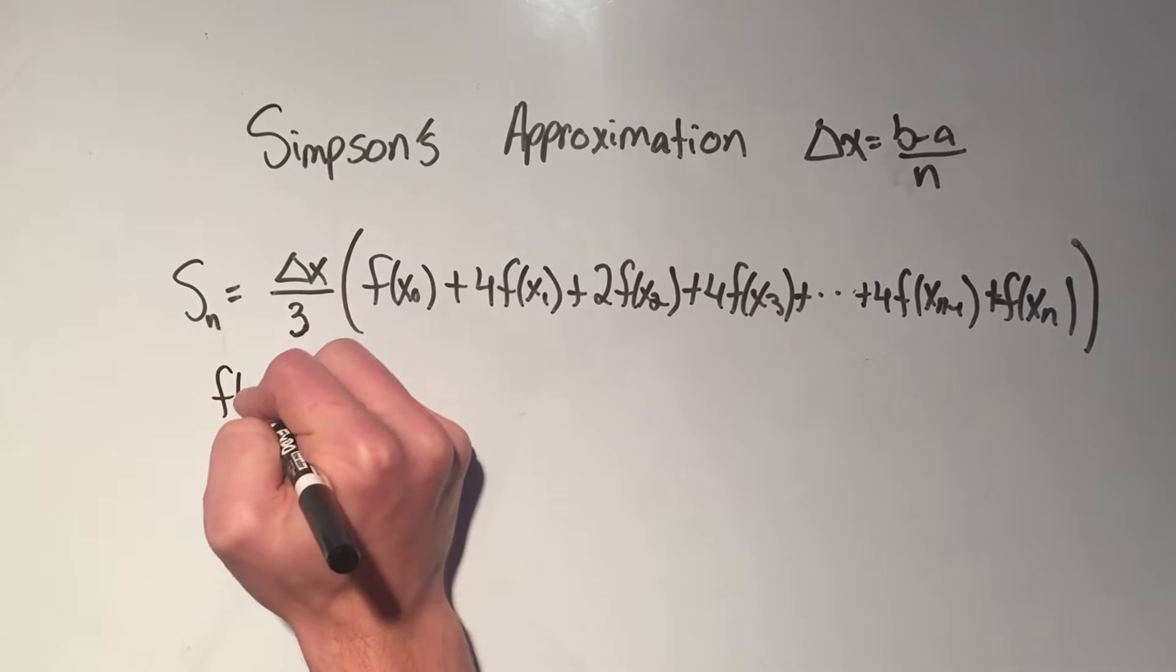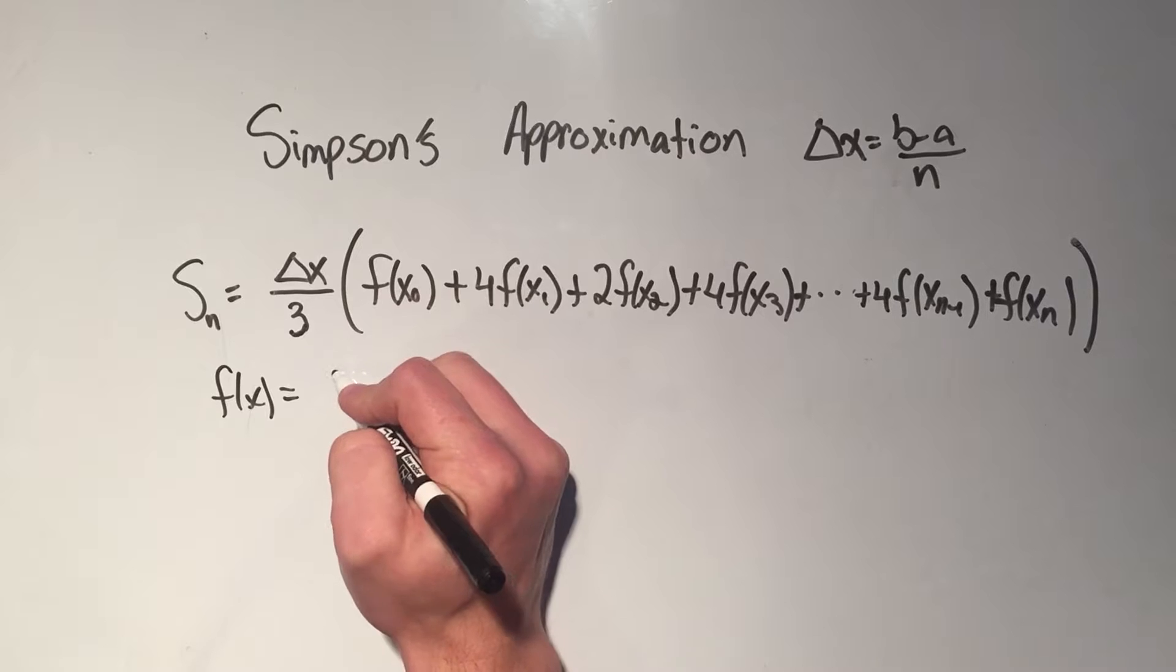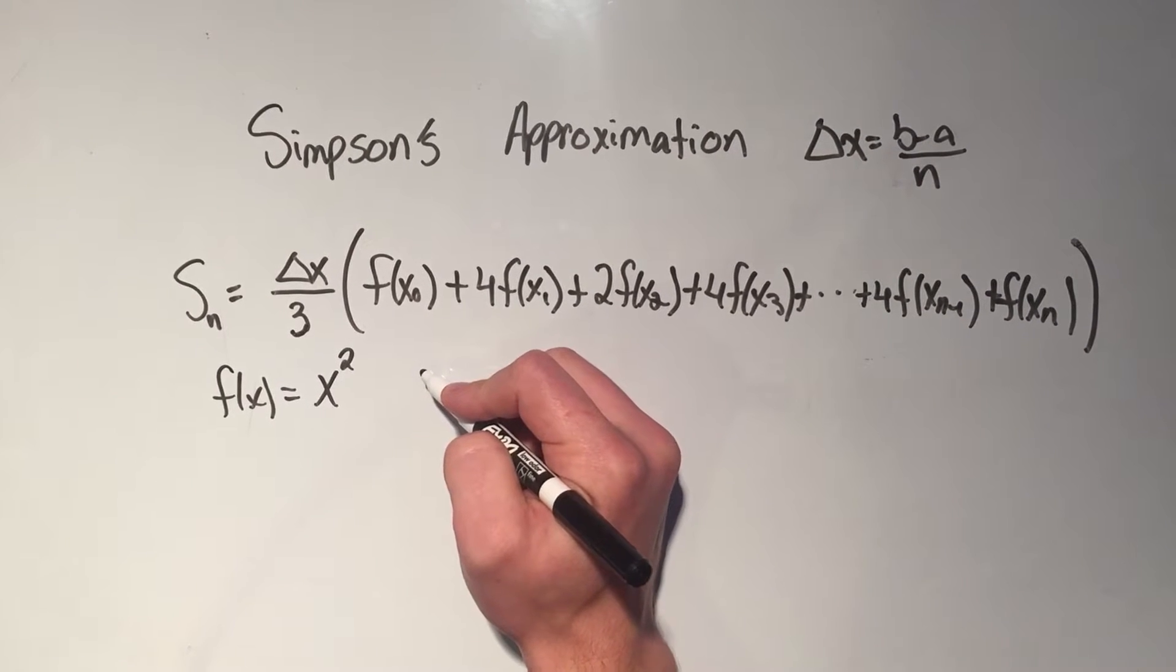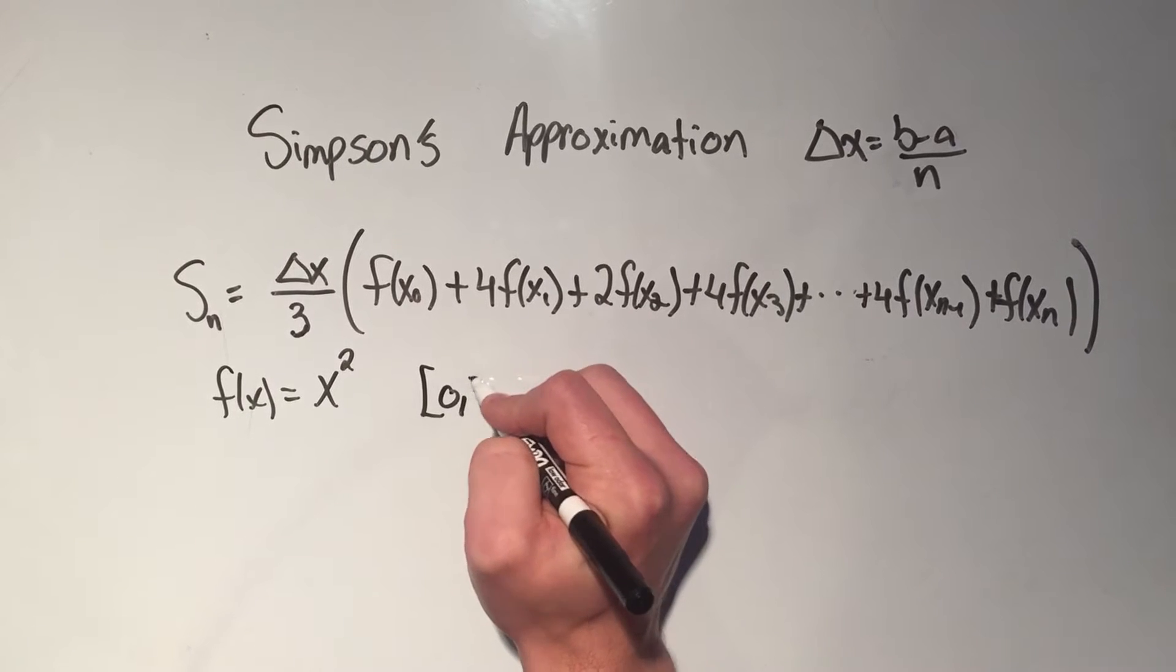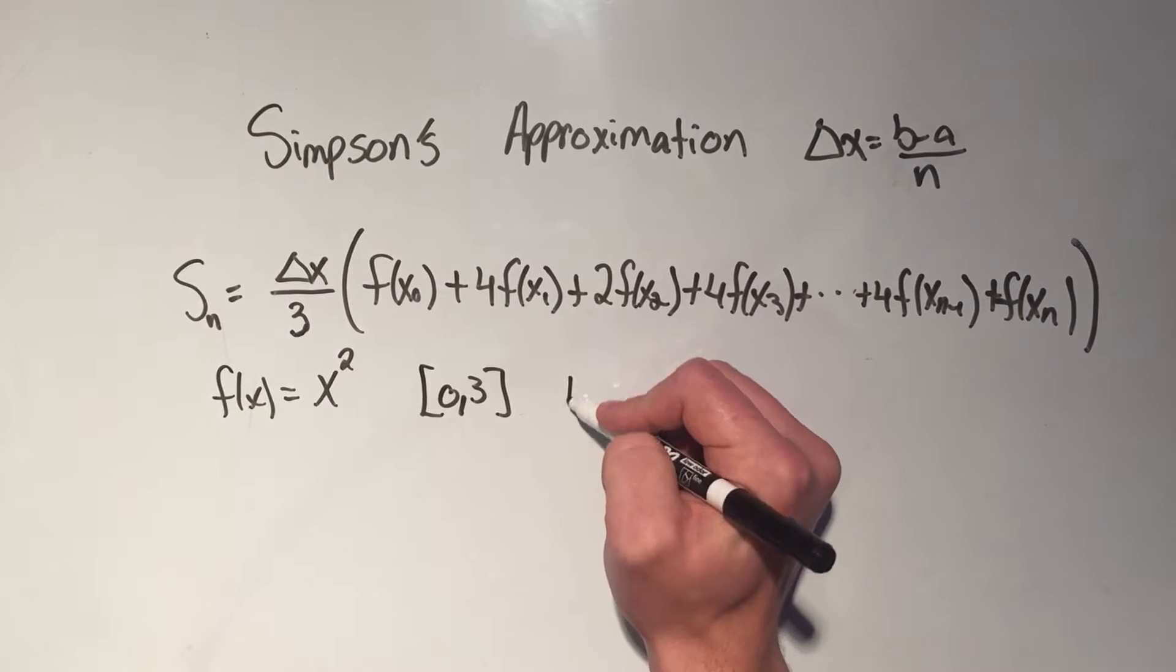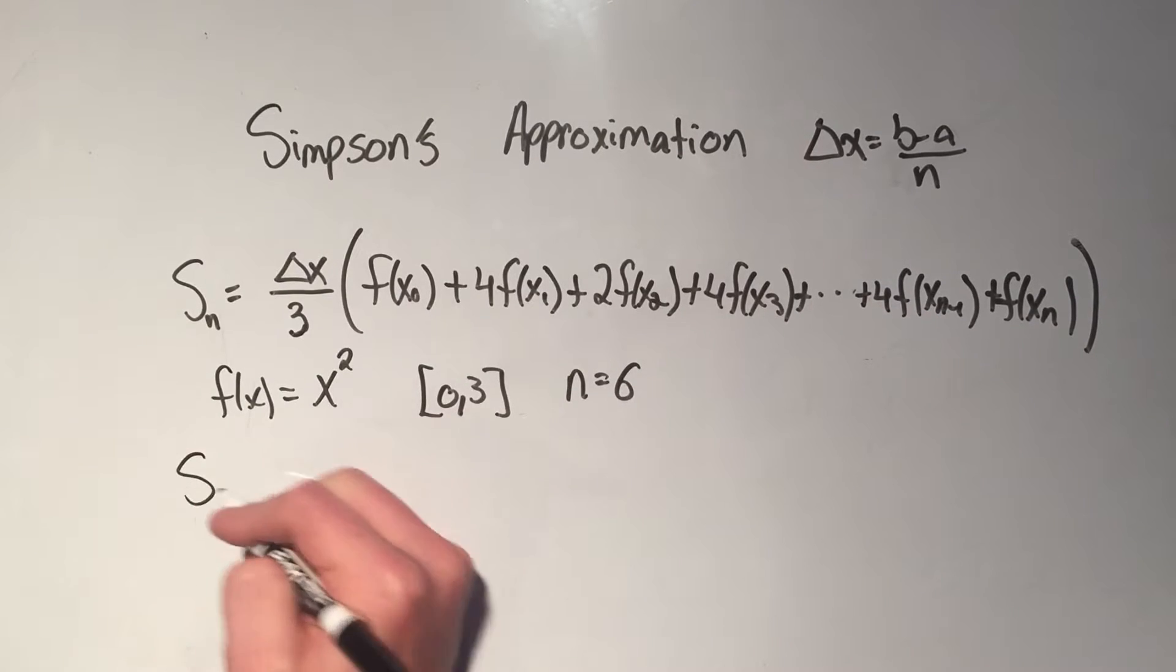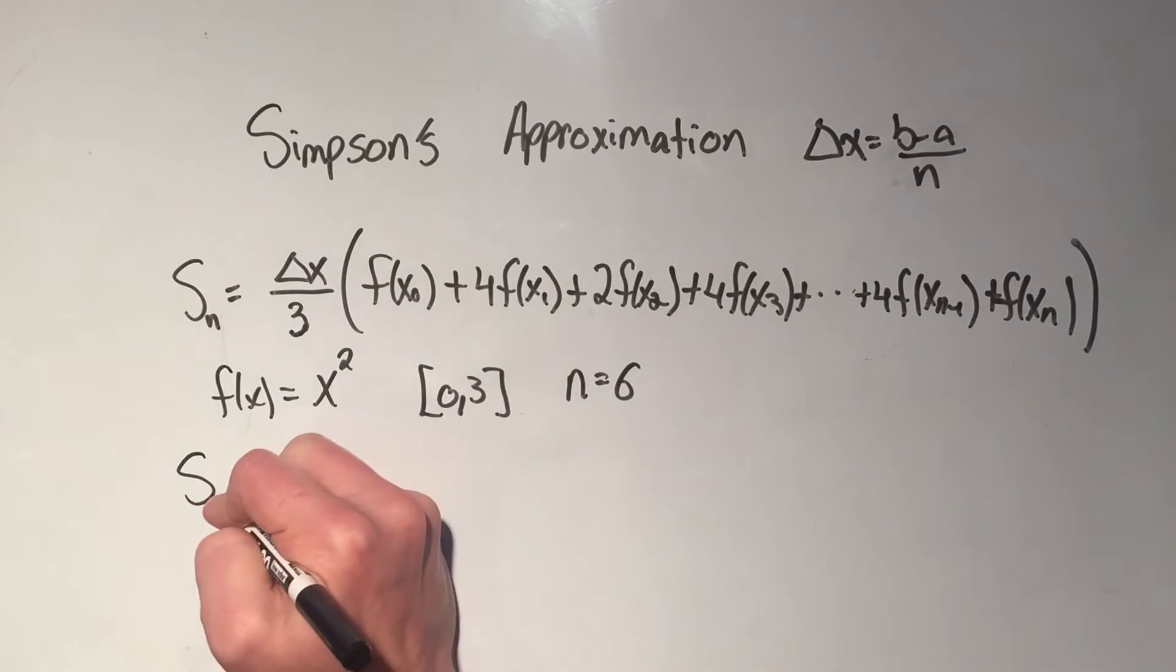So I'll do the example that I've been using with the midpoint trapezoid rule and this rule. It's f of x equals x squared on 0 to 3 with 6 rectangles, or 6 trapezoids, or 6 subintervals.